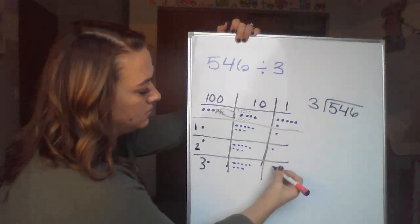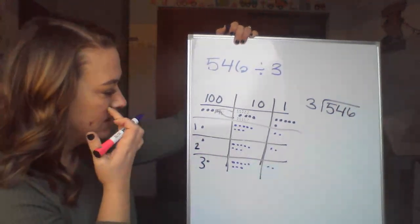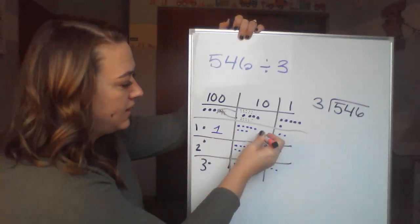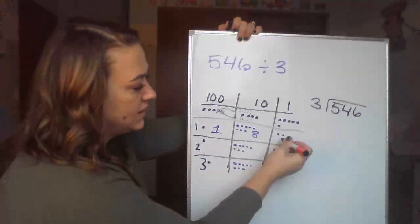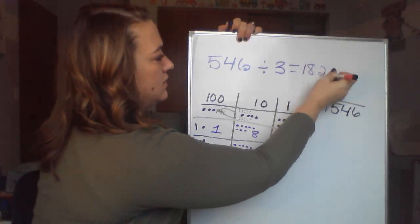And now I still have to break apart my ones that I have 6 of. So in my hundreds place, I have 1. My tens place, I have 8. And my ones place, I have 2. So our final quotient should be 182.